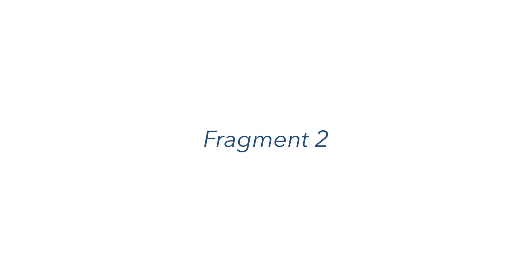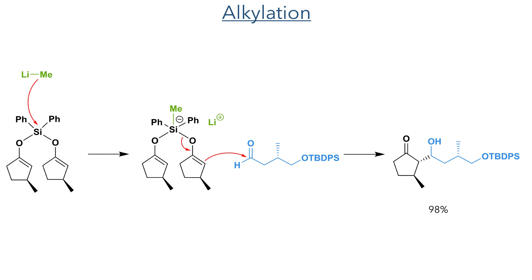To synthesize fragment two, the researchers used a bis-silyl enol ether of a cyclopentanone. This was reacted with methyl lithium, which adds to the silicon to generate an anion and promote the aldol addition to the aldehyde acceptor. The researchers used this aldol reaction as simple alkylation of the enolate was unsuccessful.